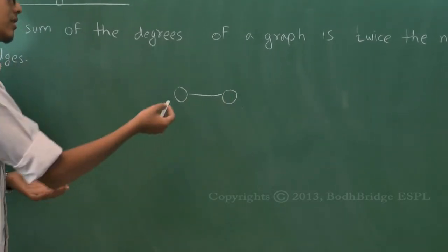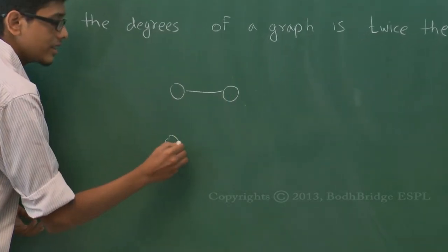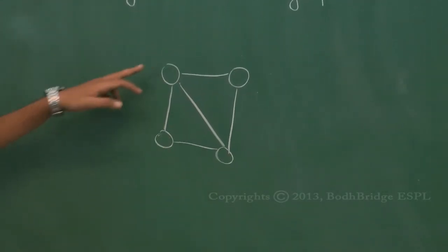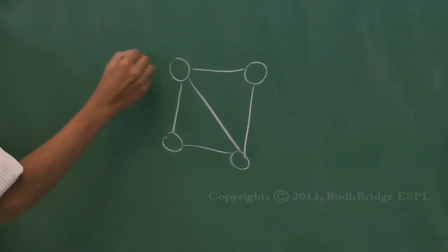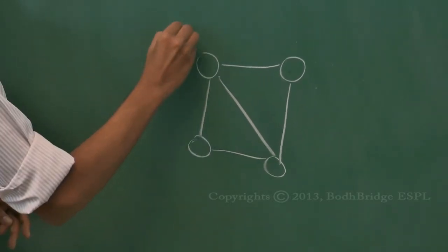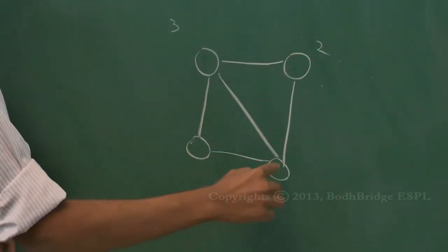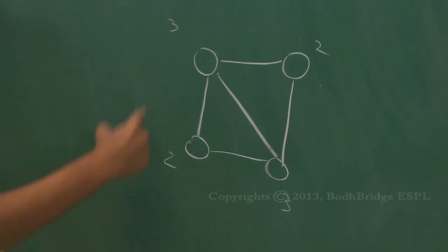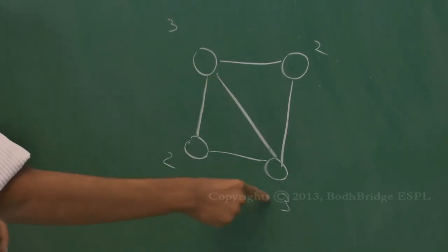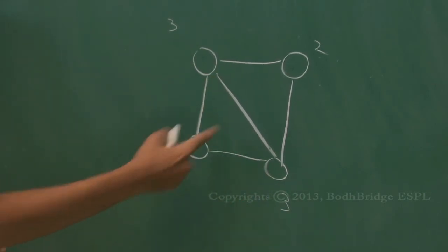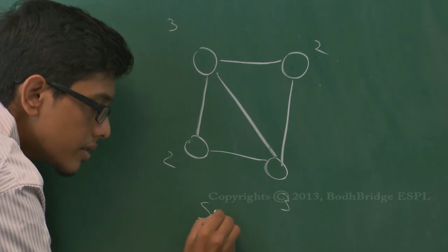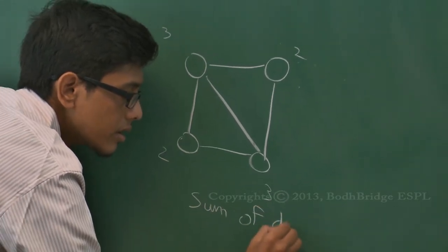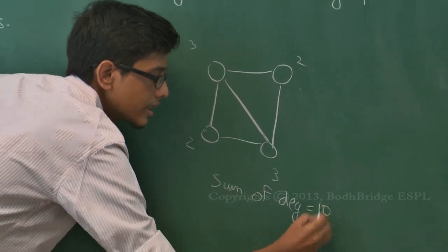Let's take an example graph. The degree of the first vertex is 3, the degree of the second vertex is 2, the degree of the third vertex is 3, and the degree of the fourth vertex is 2. So the sum of degrees is 3 + 3 + 2 + 2 = 10.